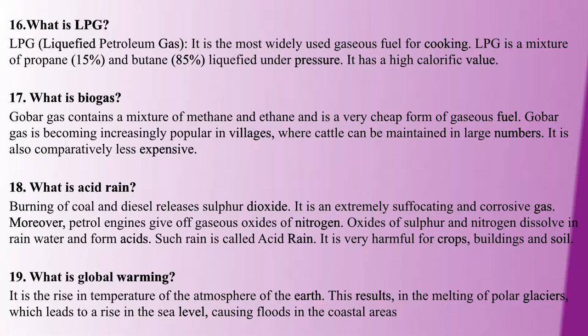What is biogas? Biogas is also called gobar gas. Gobar gas is produced from cow dung. It is a mixture of methane and ethane. It is easier to produce and less expensive, making it useful in villages. That is why gobar gas is called biogas.